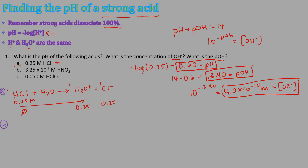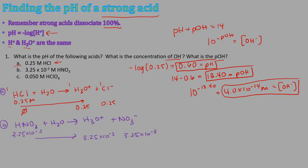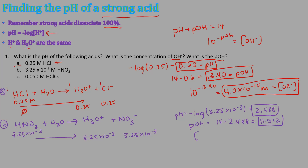For part B, HNO₃ is a strong acid, so it dissociates 100% in water to give hydronium and nitrate. With a concentration of 3.25 × 10⁻³ M, the pH is −log(3.25 × 10⁻³) = 2.488. The pOH is 14 − 2.488 = 11.512, and [OH⁻] = 10^(−11.512) = 3.08 × 10⁻¹² M.